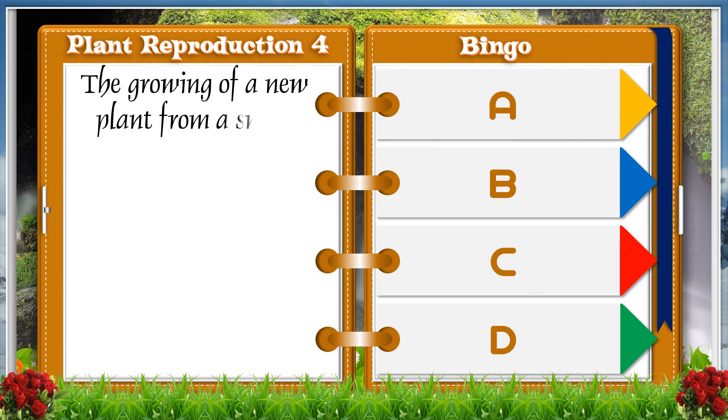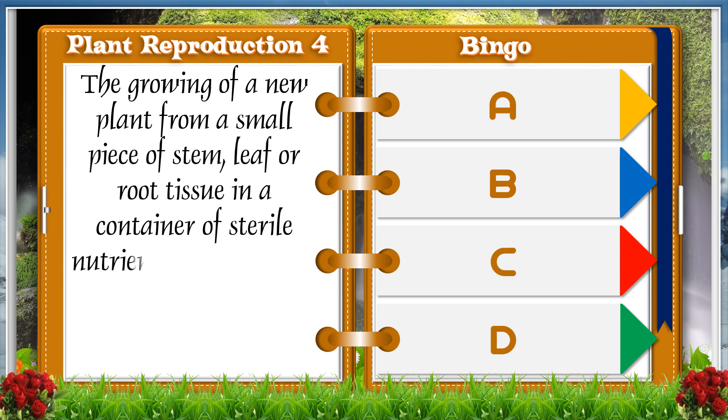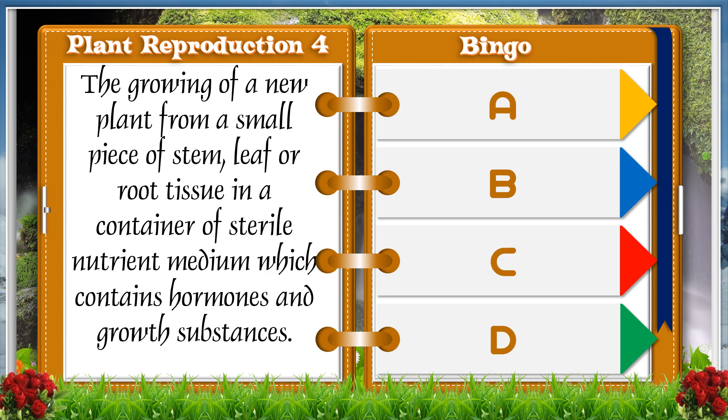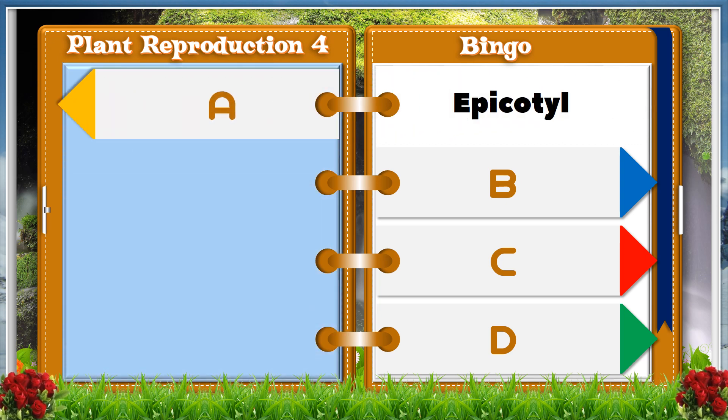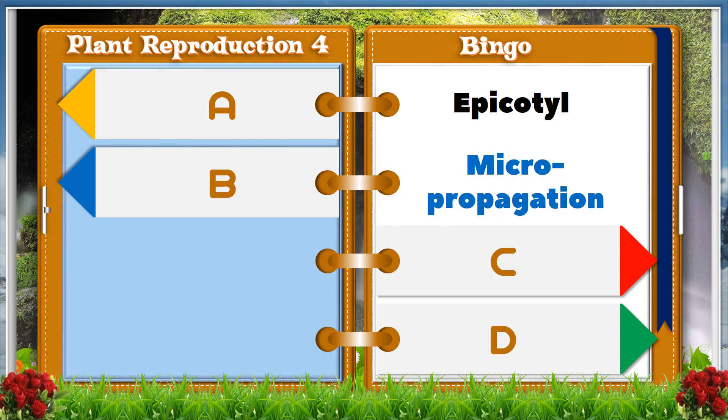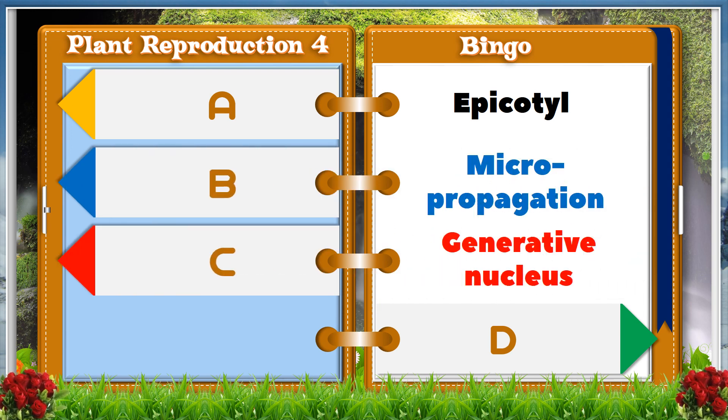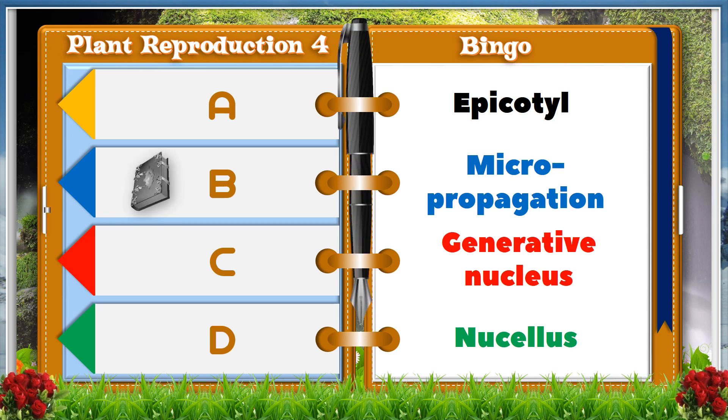The growing of a plant from a small piece of stem, leaf, or root tissue in a container of sterile nutrient medium, which contains hormones and growth substances. A. Epicotyl. B. Micro-propagation. C. Generative nucleus. D. Nucellus. And the answer is B, Micro-propagation.